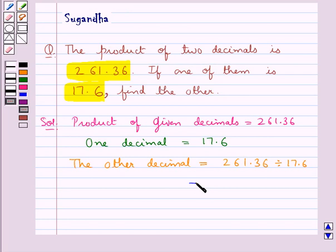Now when we have to divide two decimals, then we convert the divisor into a whole number. In this case, the divisor is 17.6. We would convert this into a whole number by multiplying the dividend and the divisor by 10. Since we have just one place of decimal in the number 17.6, we multiply the dividend and the divisor by 10.